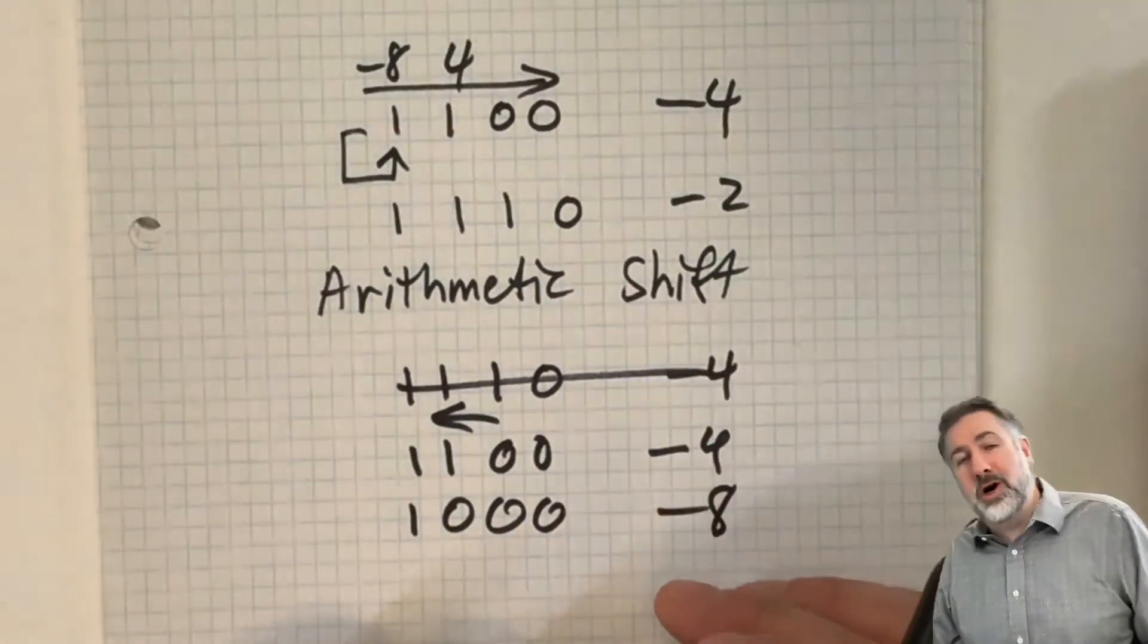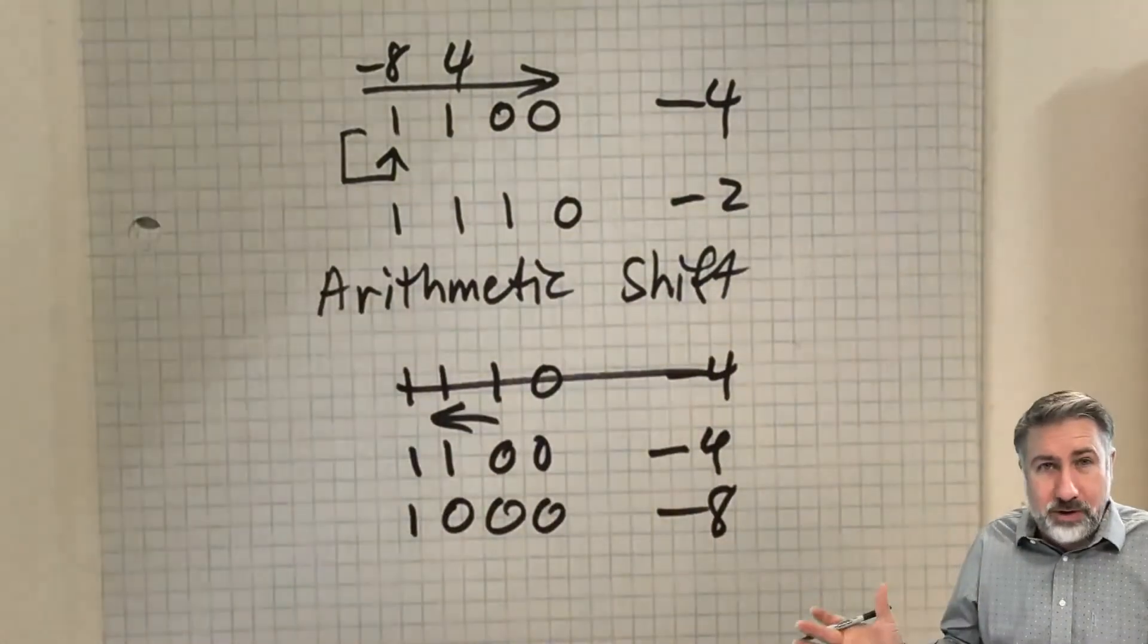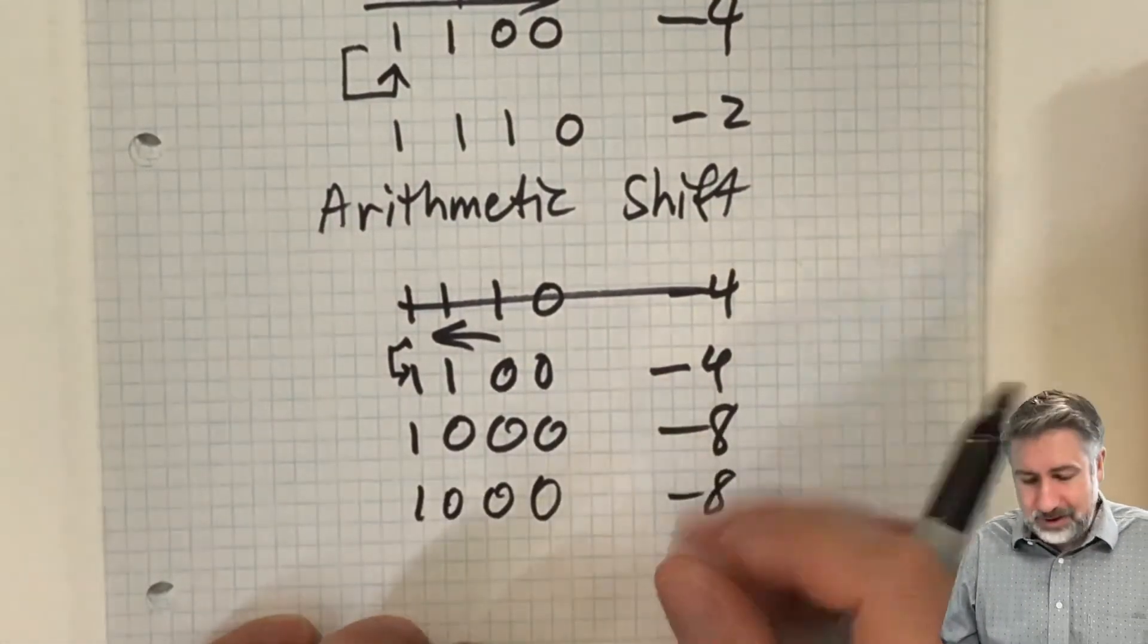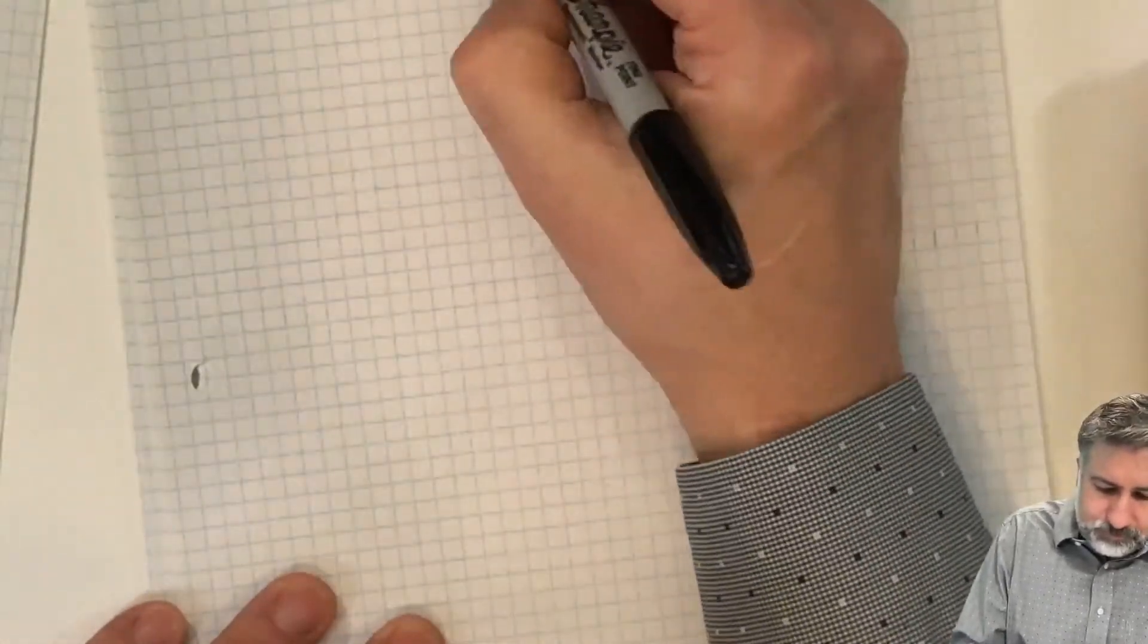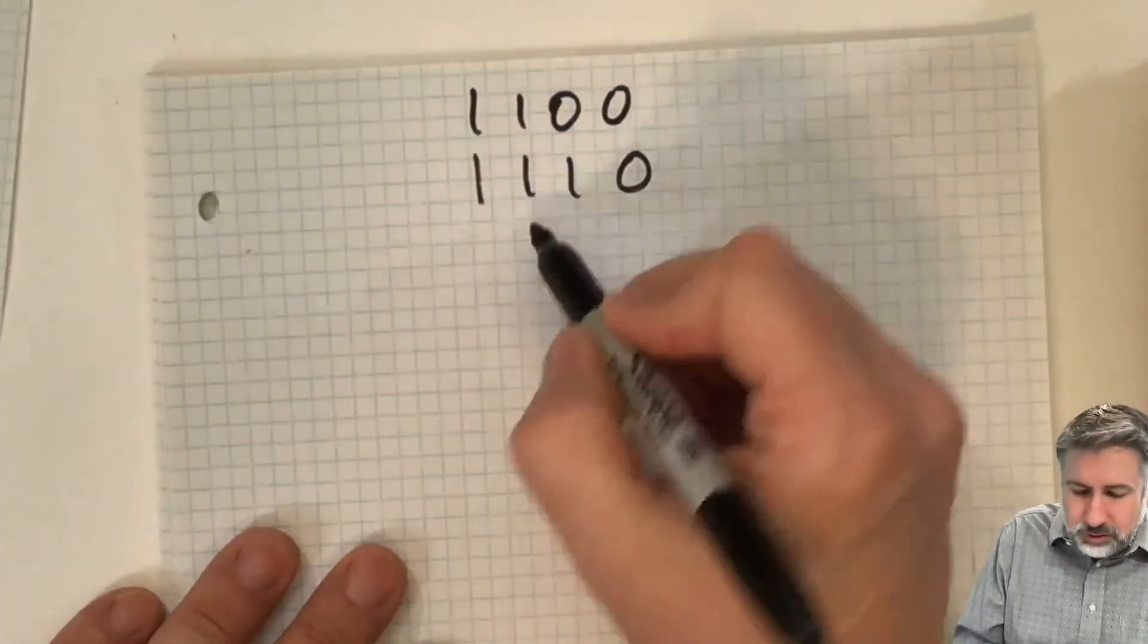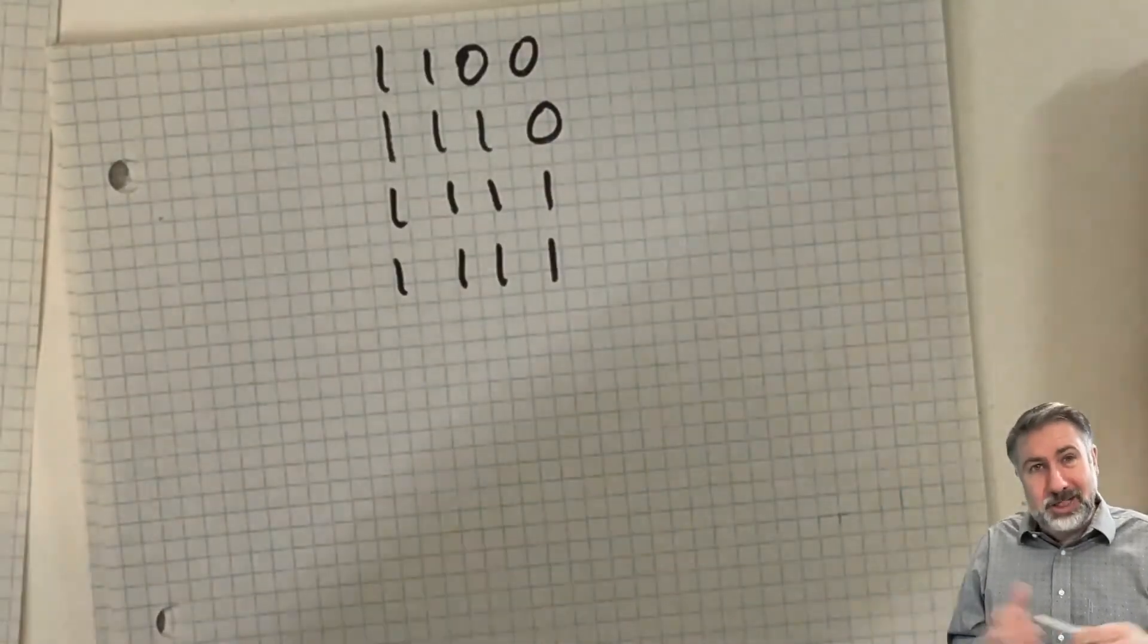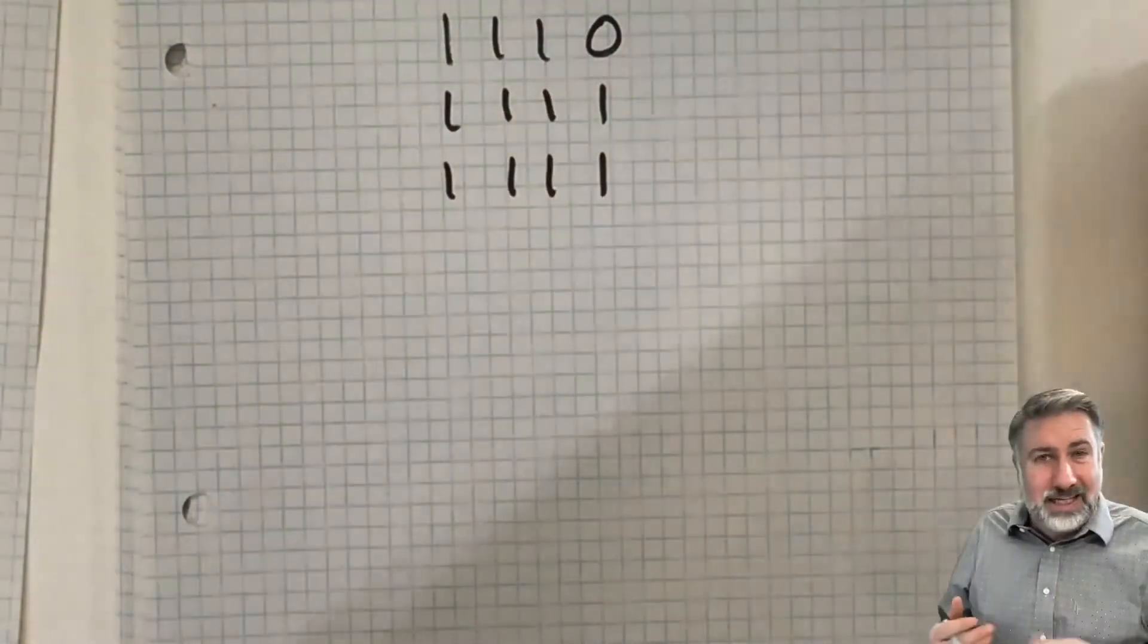The problem with this is the problem with all shifts interpretation as multiplication or division is that at the edges of the representation, weird things happen. Because if you take this and shift it again, duplicating that sign bit one more time, you get negative eight again. And the same thing here. If we start with negative four, then we get negative two, and then we get negative one, and then we get negative one again, right? So it's not always going to be the same as multiplication or division by two, but the concept is there.